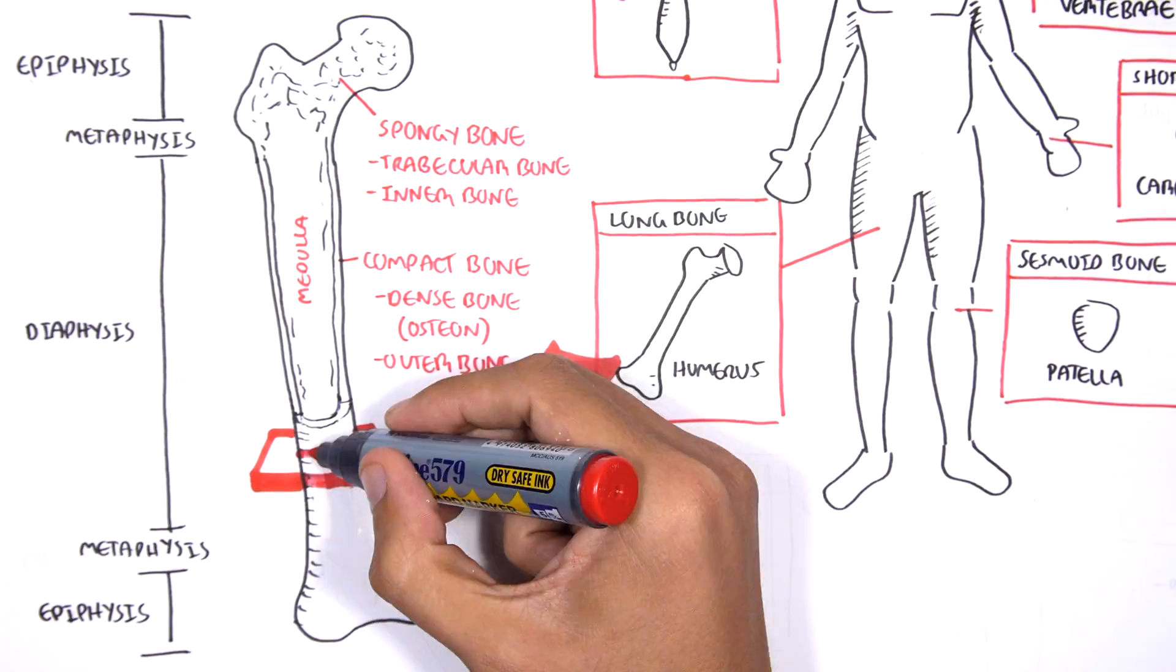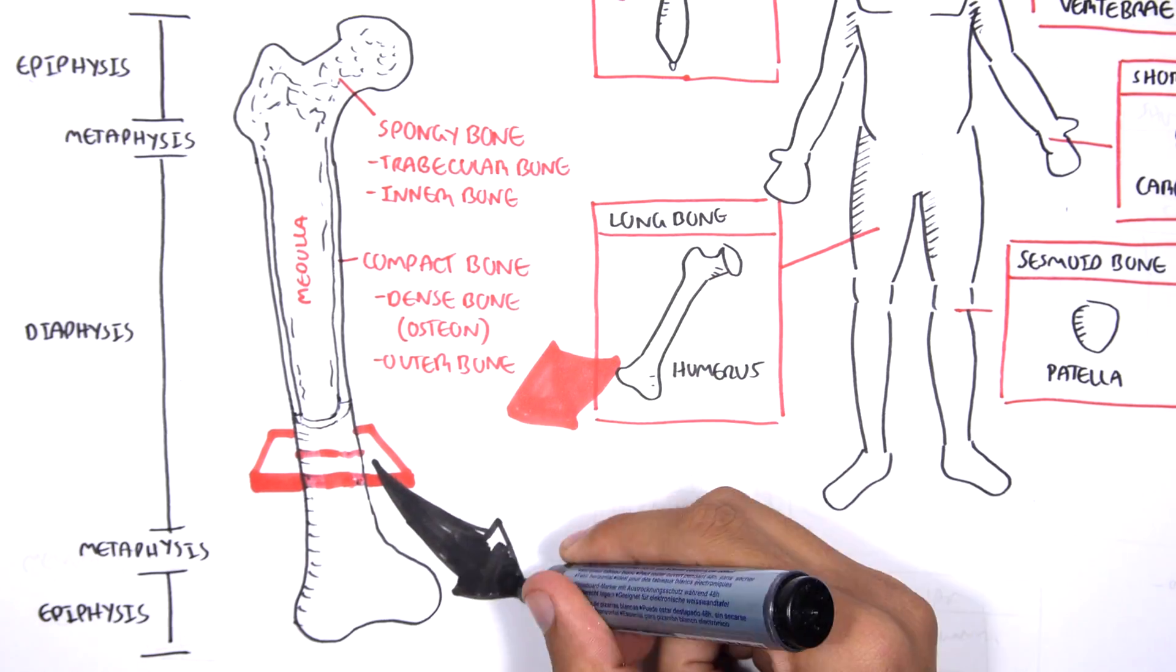Let's cut a cross-section of the humerus. The hollow center here, the cavity, is the medulla.